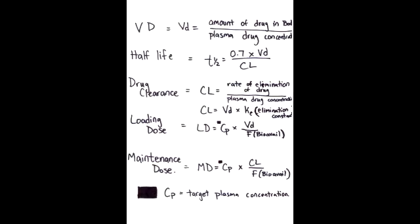What is the equation of drug clearance? The equation of drug clearance is rate of elimination of drug over the plasma drug concentration. Clearance can also be thought of as volume of distribution times the elimination constant, which is represented here by KE.